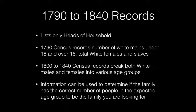The 1790 to 1840 Census records list only heads of households. The 1790 Census records the number of white males under 16, the white males over 16, the total white females, and the number of slaves. The 1800 to 1840 Census records both white males and white females into various age groups and then slaves. This information can be used to determine if the family has the correct number of people in the expected age group to be the family you are looking for.